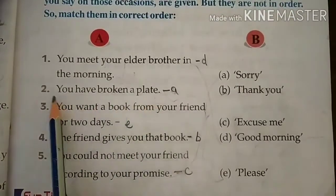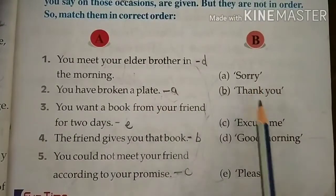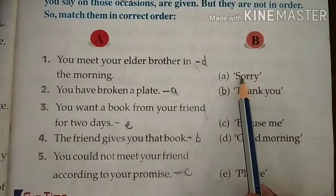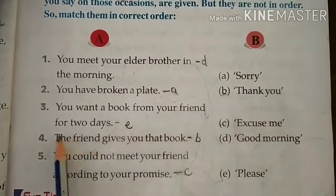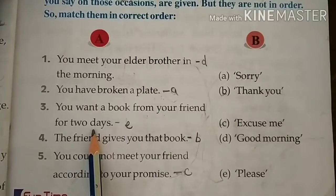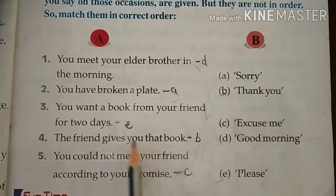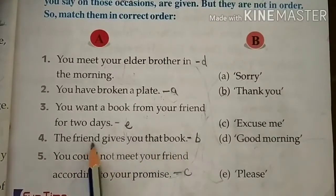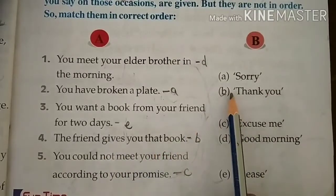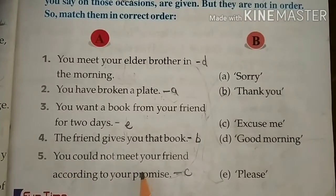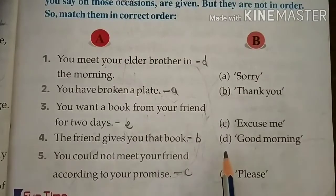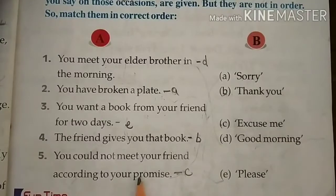You have broken a plate। जब आप कोई plate तोड़ देते हैं तो आप क्या कहते हैं? Sorry। तो यहाँ A — Sorry। You want a book from your friend for two days। आप अपने दोस्त से दो दिन के लिए book चाहते हैं, तो आप क्या यूज़ करेंगे? Please। तो यहाँ E। The friend gives you the book — तो आप उसको क्या कहेंगे? Thank you। तो B। You could not meet your friend according to your promise — आपने वादा किया था लेकिन मिल नहीं पाए, तो C — Excuse me।